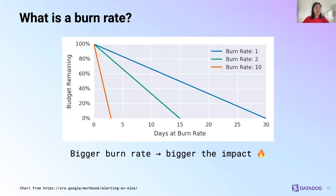To understand burn rates even more, here's a graph that shows the outcome of each burn rate. A burn rate of 1, represented by the blue line, means a gradual burn of the error budget. A burn rate of 10, represented by the red line, means a fast burn of your error budget. The bigger the burn rate, the faster the error budget is burning, and ultimately the bigger the impact is on your services.